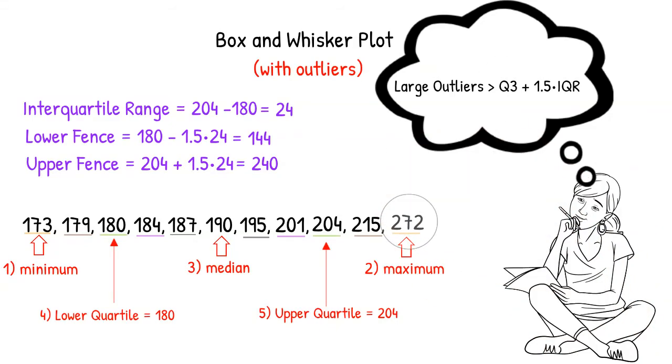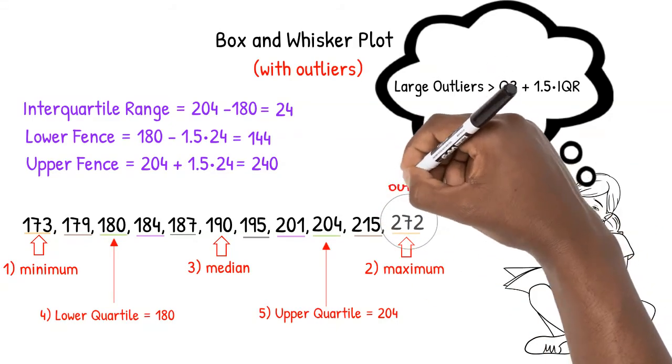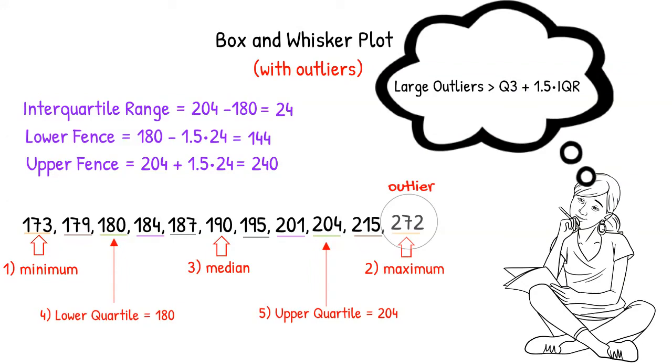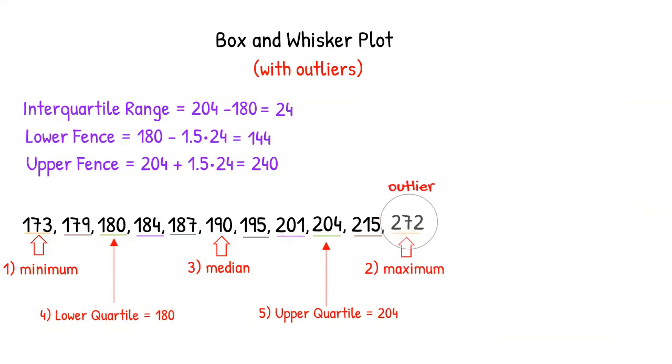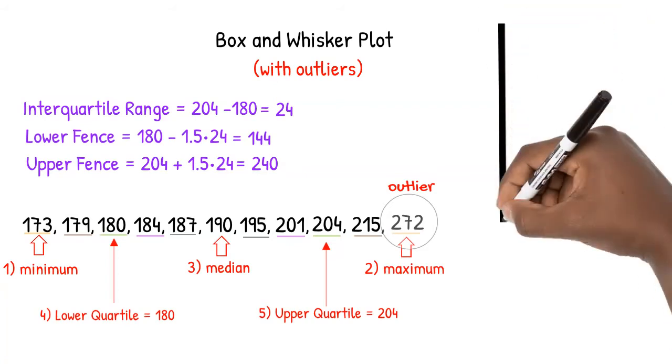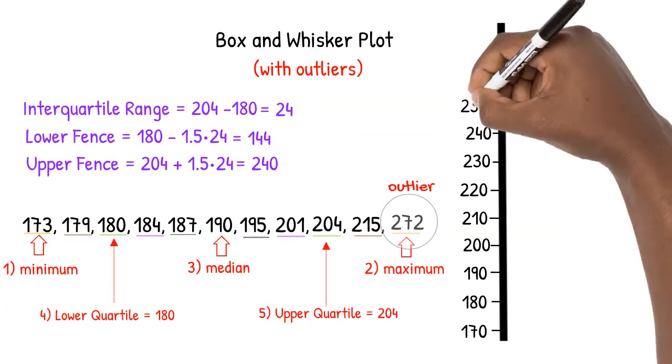Because 272 is above our upper fence, it is an outlier and should be displayed in our box and whisker separately. Let's start to create the box of our box and whisker plot by creating a scale from 170 to 280 to fit all of our values.